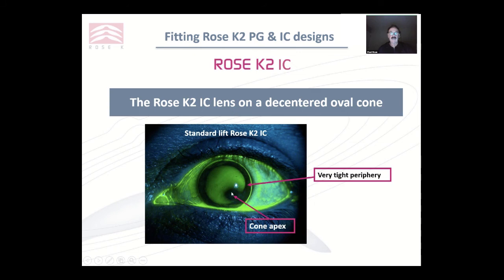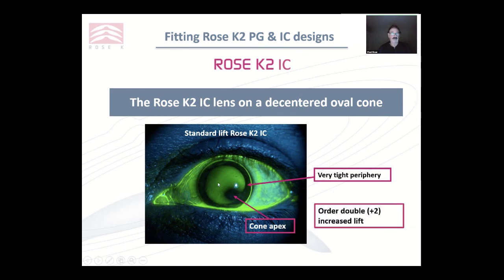IC on a very decentred cone — would you use PG here? You may have got away with PG, but this practitioner has used the IC design. The cone apex was bearing quite heavily — you have to make sure you don't cause staining over that point. In the periphery, the darker that band is, the more you have to change the edge lifts. Going to a standard increase is not going to be sufficient. You would have to go to a double increased, a plus two, to open that edge lift up significantly.